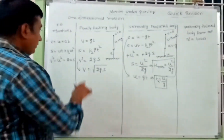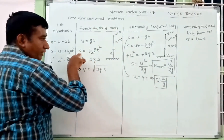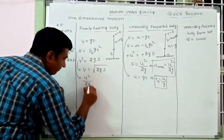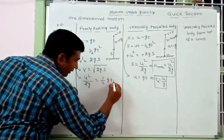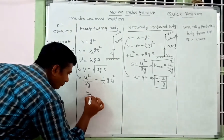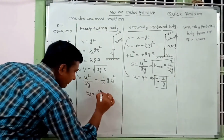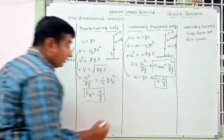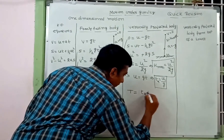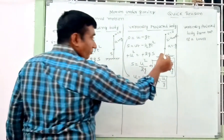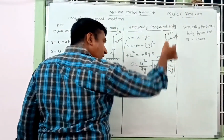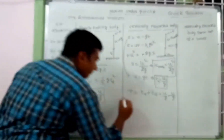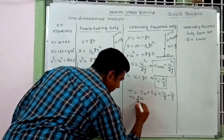Using h_max = u²/2g and the time of descent: substituting, we can show t_d = u/g. Therefore, the total time of flight T = t_a + t_d = u/g + u/g = 2u/g.